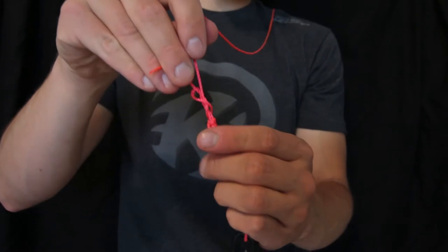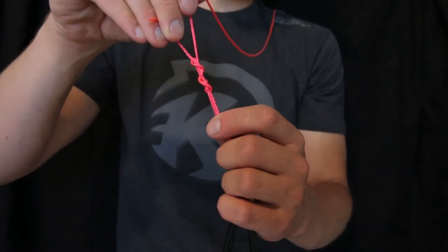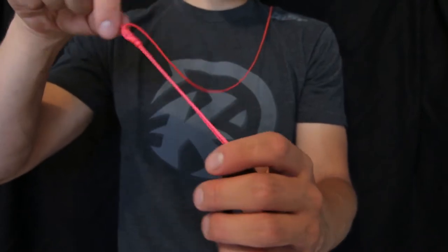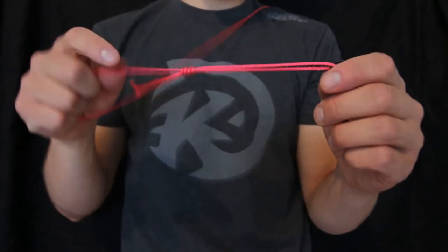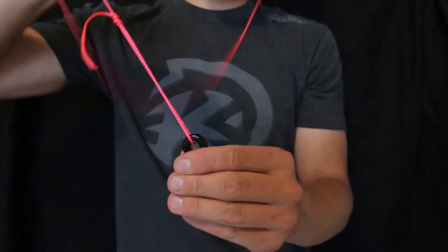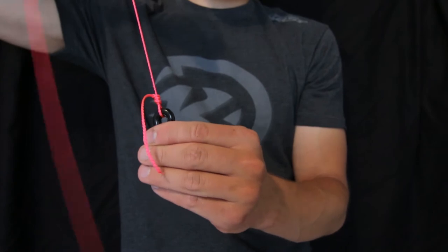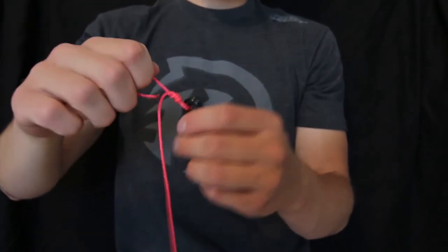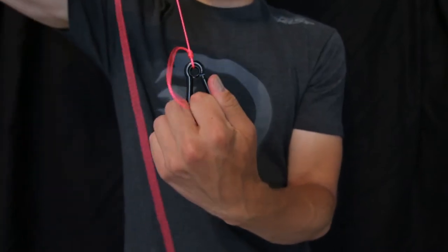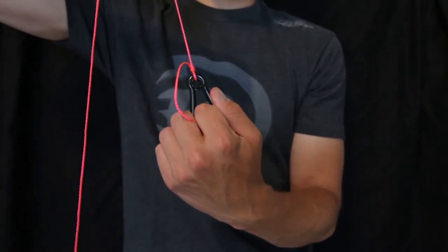Five loops on the uni knot will give you maximum strength. Go ahead and cinch your tag fairly tight, not all the way yet. Before you tighten it all the way down, you're going to want to wet your knot here. And then, when your knot is wet, go ahead and slide it down to your eyelet. Tighten your tag in just one last time.